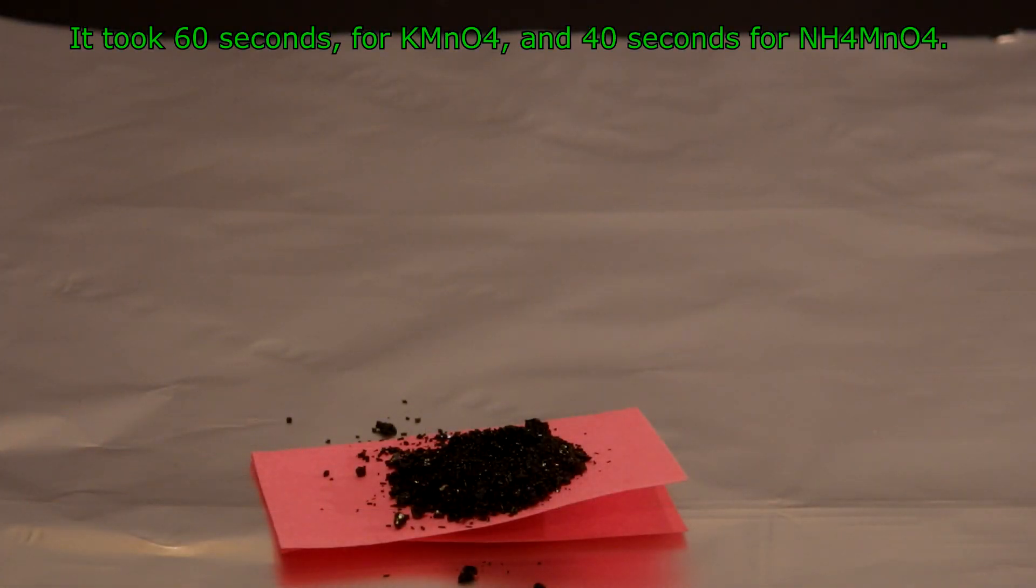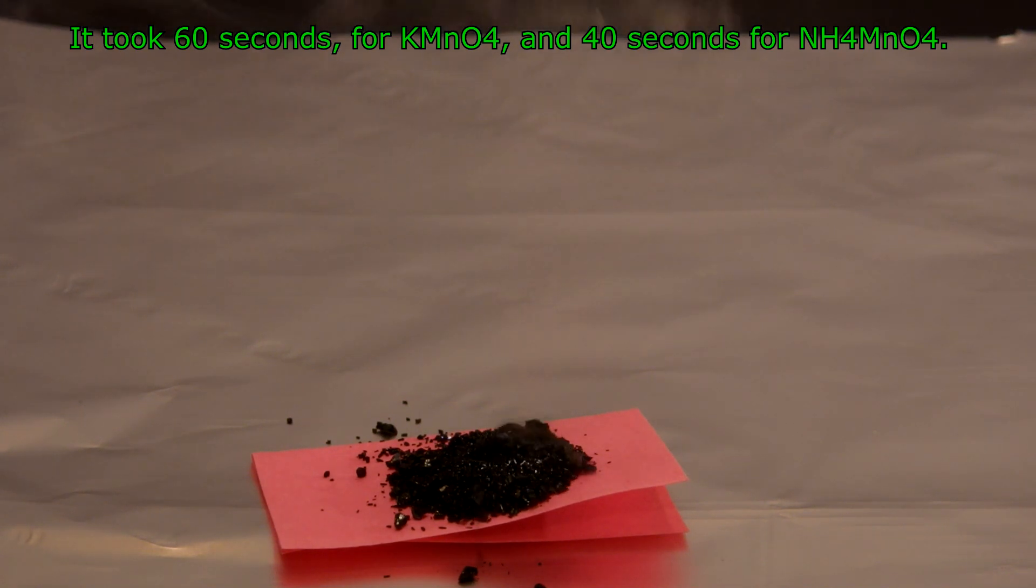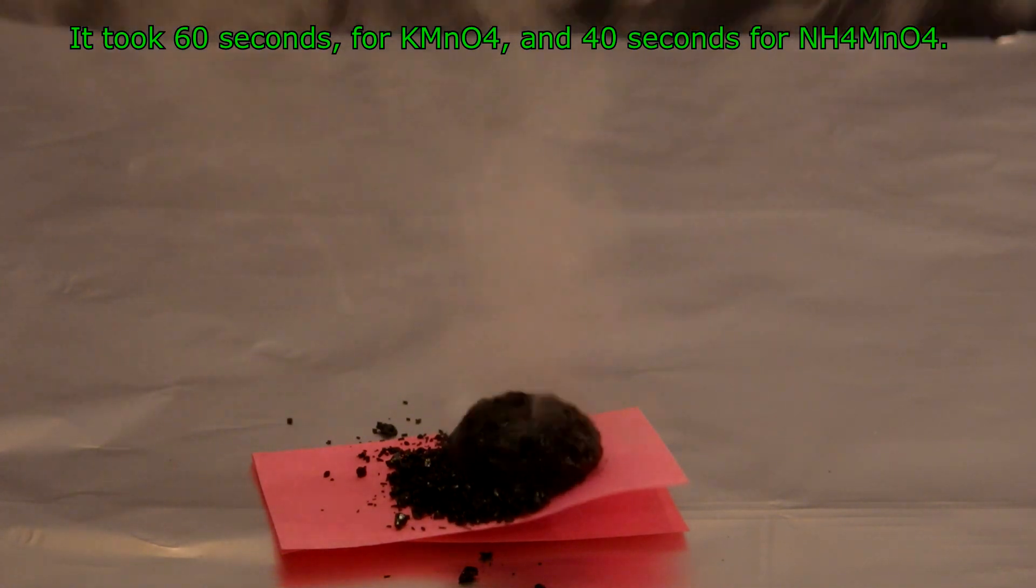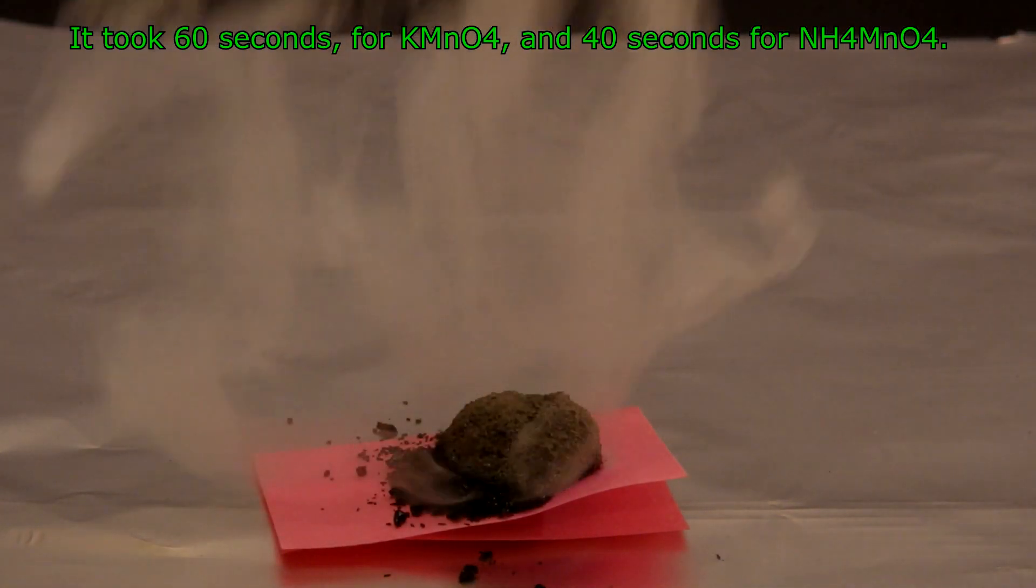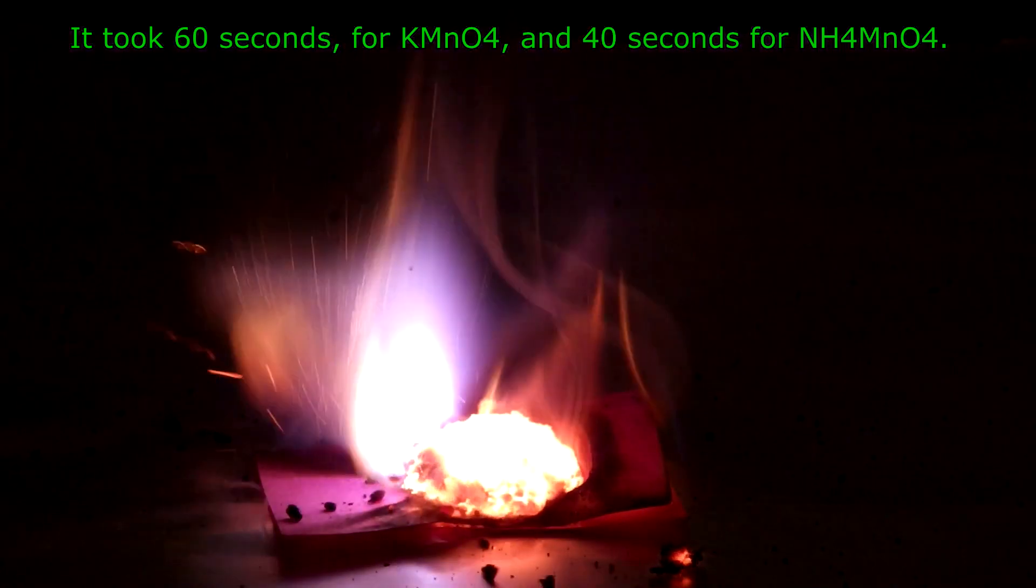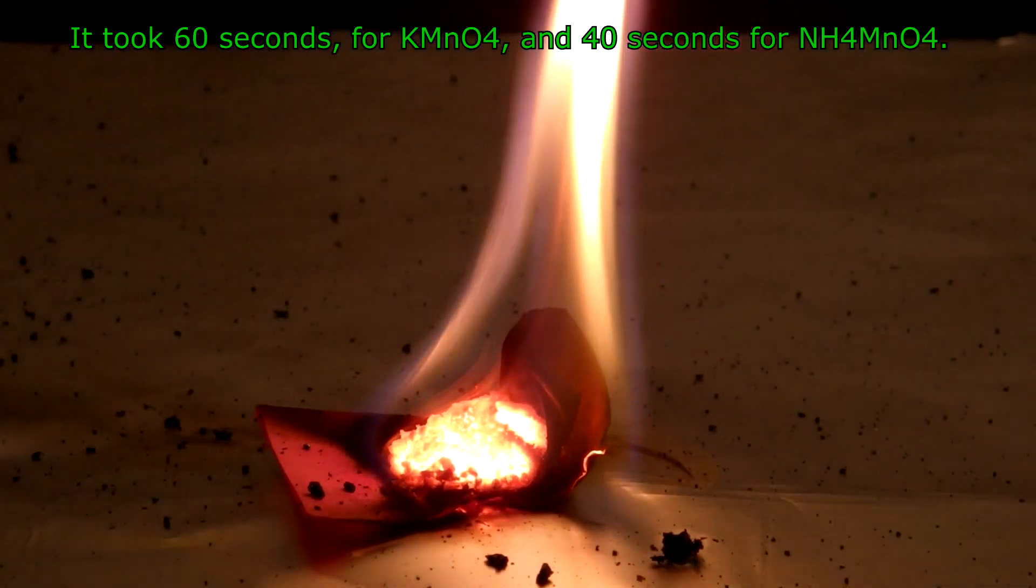Different, isn't it? Not only the reaction is different, but also the speed of oxidation. Although crystal size of ammonium permanganate in this test is bigger, reaction proceeds 20 seconds faster. This means that ammonium permanganate is quite stronger oxidizing agent than potassium permanganate.